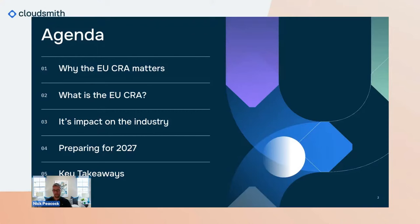We're going to cover five key topics over the next 27 minutes or so. We're going to look at why the EU CRA matters — to me and to you. We're going to talk about what the EU CRA is, what the impact is on open source contributors and consumers, how you should prepare for 2027, and I'll give you some personal key takeaways.